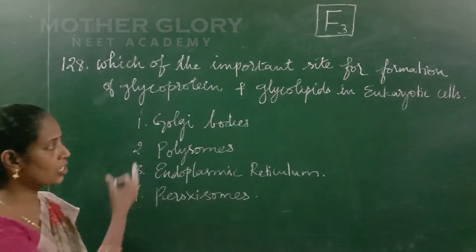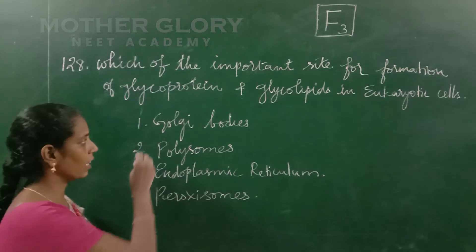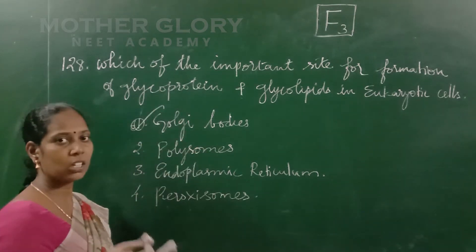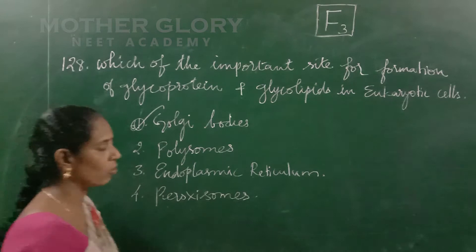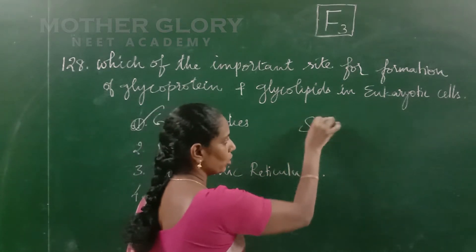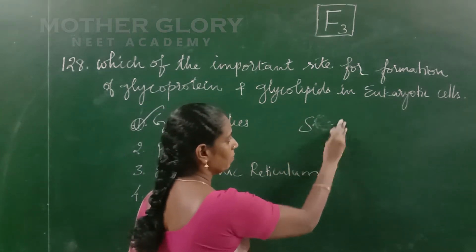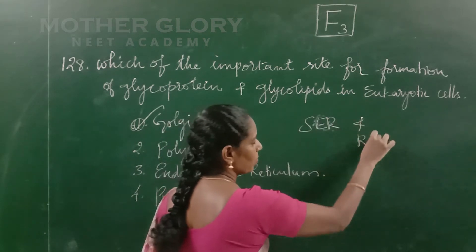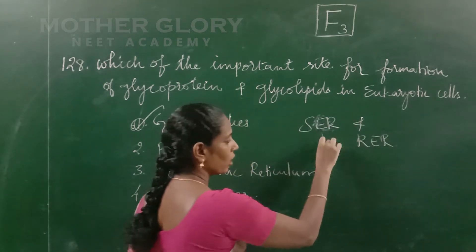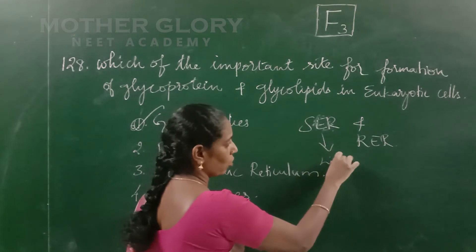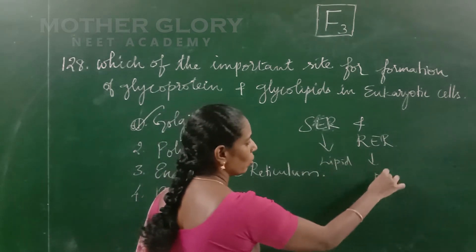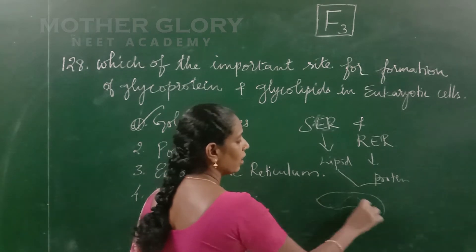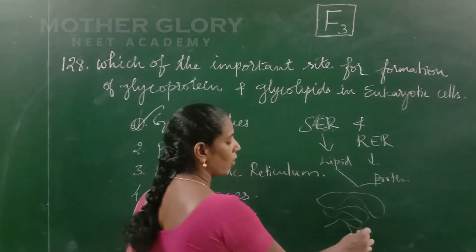The glycoproteins and glycolipids are formed actually in the endoplasmic reticulum — the smooth endoplasmic reticulum and the rough endoplasmic reticulum. The smooth endoplasmic reticulum is involved in lipid form and the rough endoplasmic reticulum is involved in protein form. This is the genetic form of glycoproteins and glycolipids.